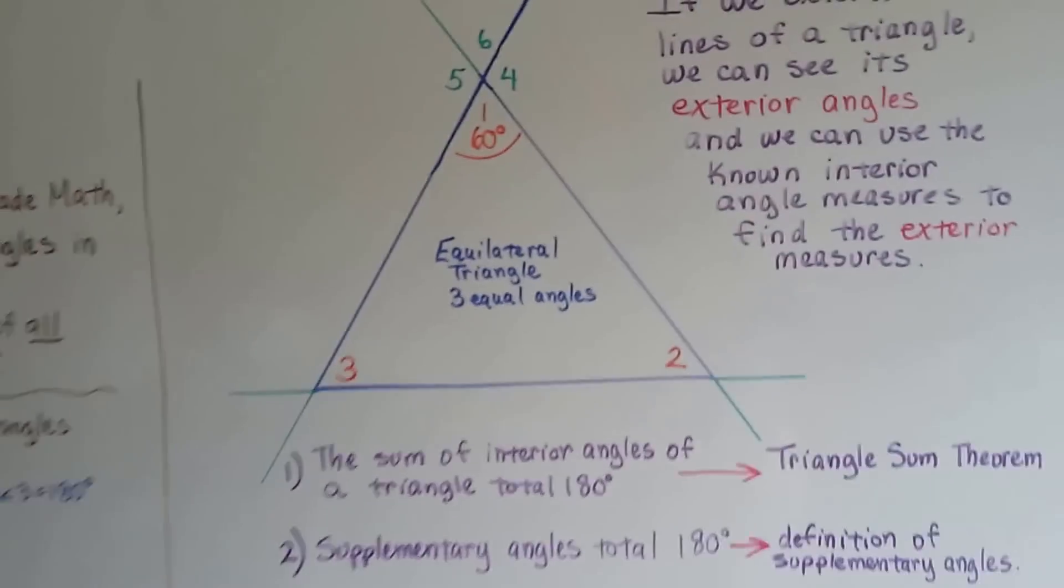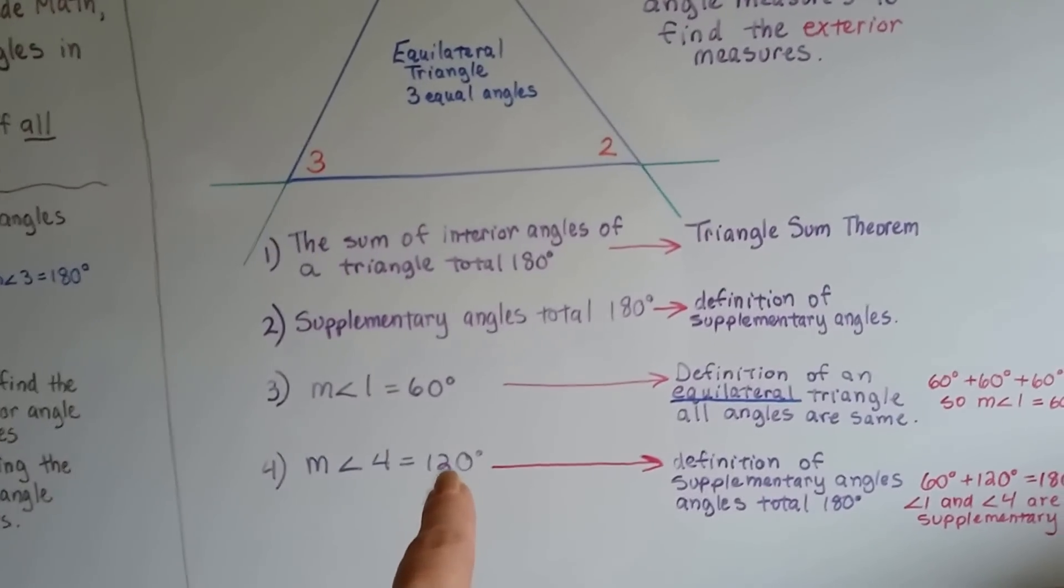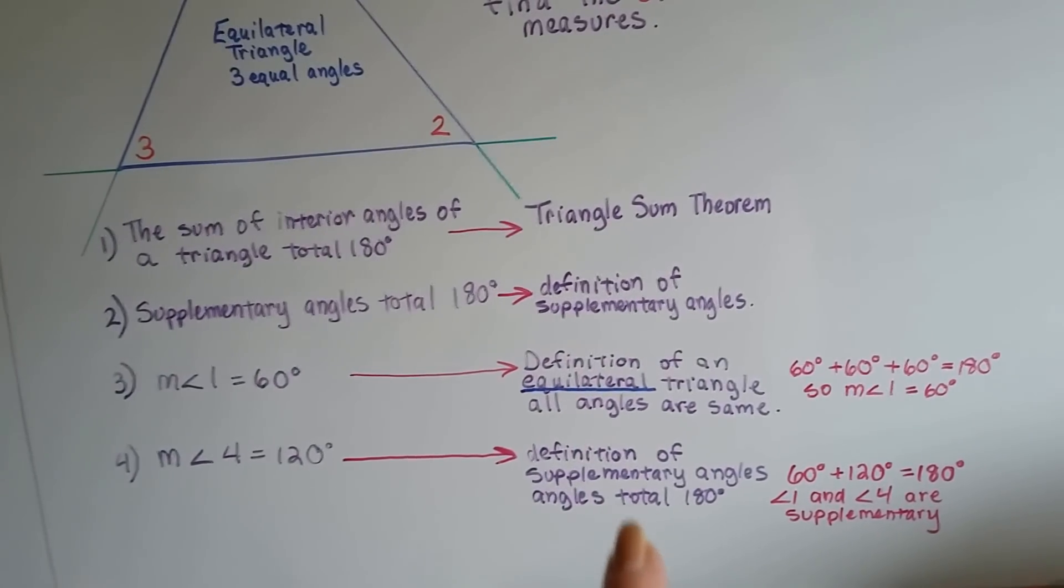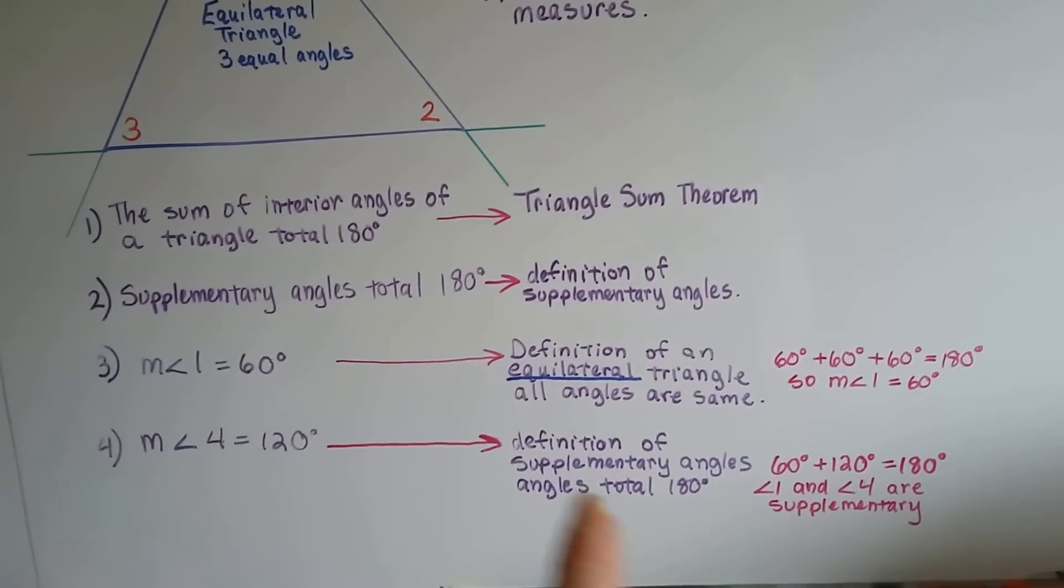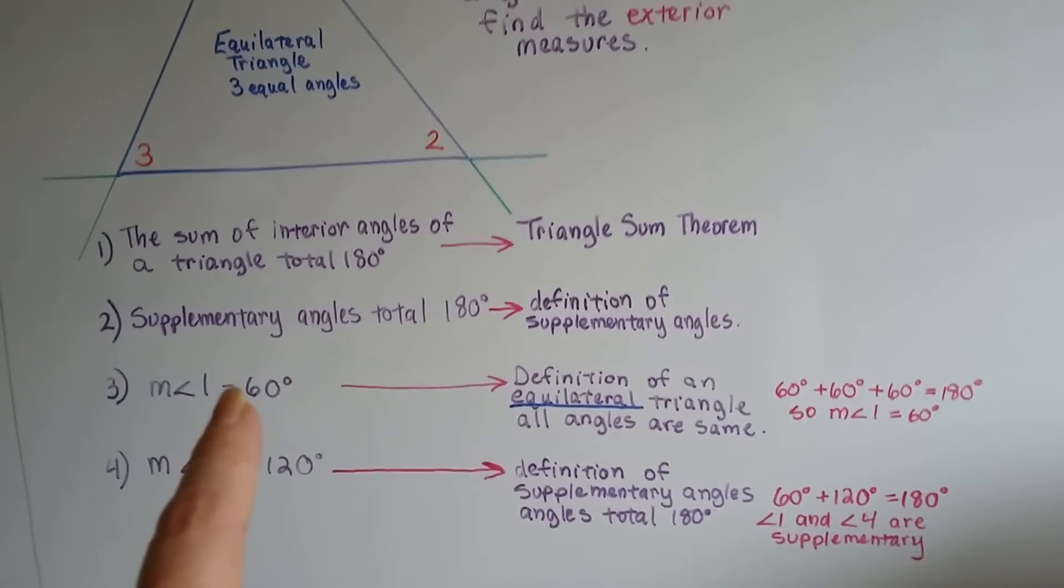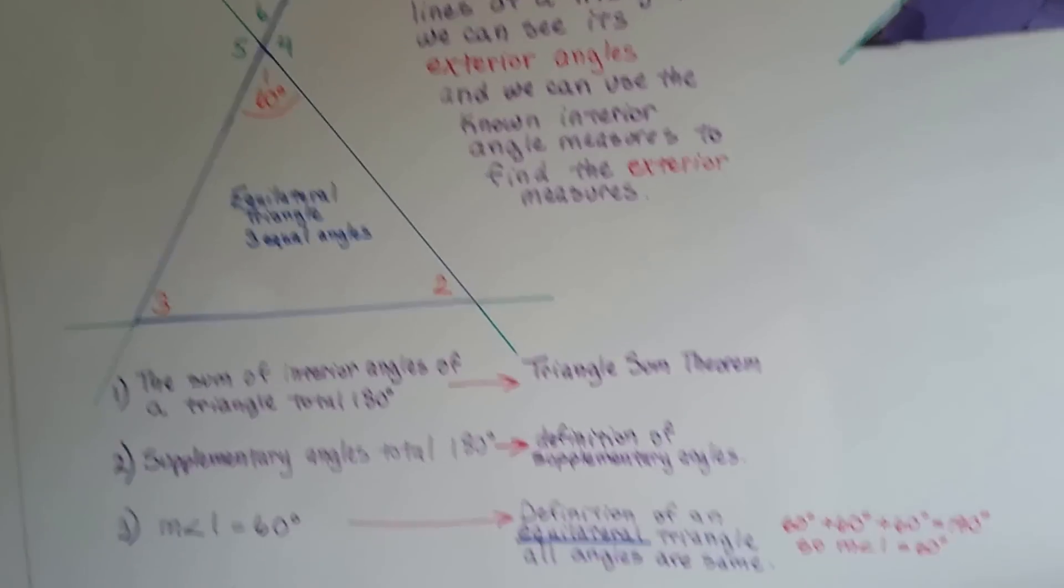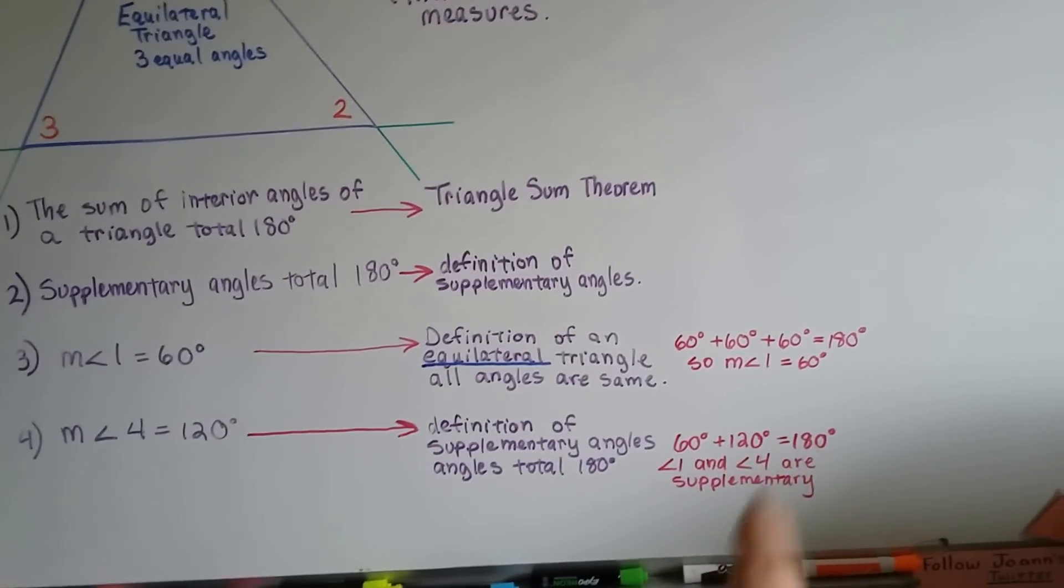So what's angle 4? Angle 4 is 120 degrees. How do I know that? Because of the definition of supplementary angles. The angles total 180 degrees. So if measure of angle 1 is 60, then 4 has got to be 120. See? 60 plus 120 is 180.